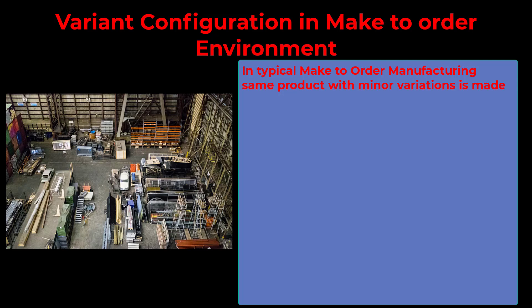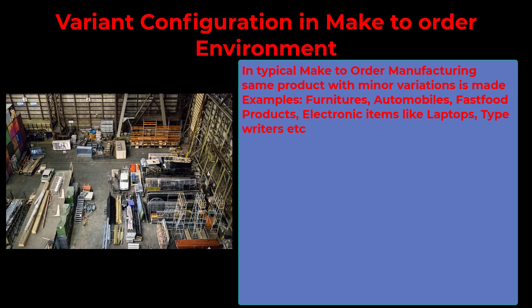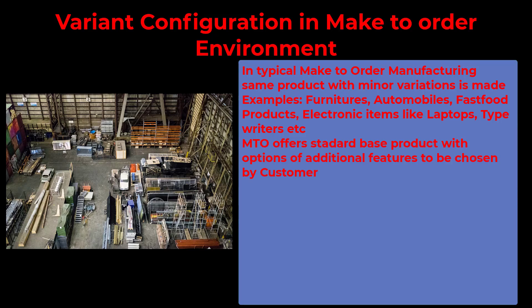Variant Configuration is a tool that simplifies the complex manufacturing process when manufacturers receive various specifications for the same product. Examples include furniture, fast food, electronic products, automobiles, typewriters and laptops, etc. In all these cases, you offer a standard product as a base, and on top of this offering, you provide options to the customer for choosing some or all of them as additions to the base product.